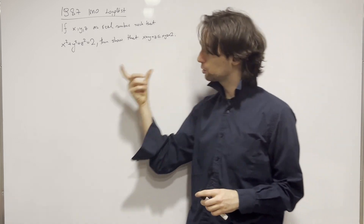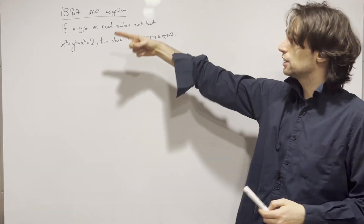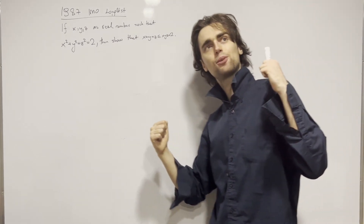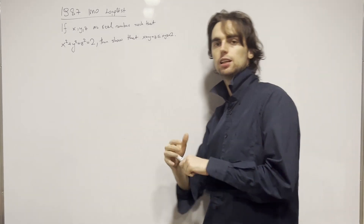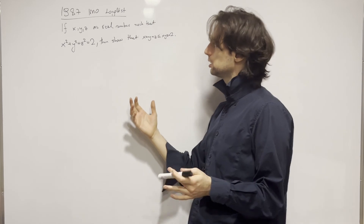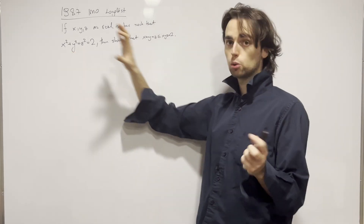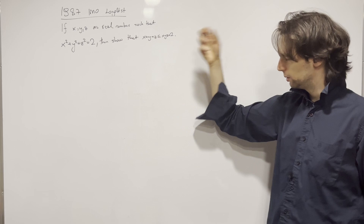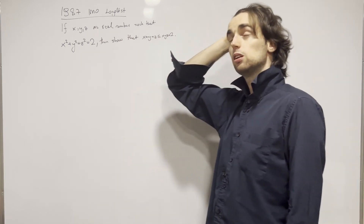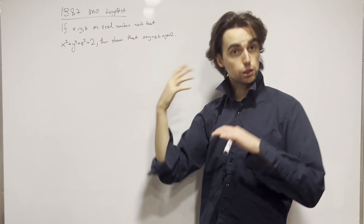I want to show you this problem because it's non-standard. It says x, y, z are real numbers — so it's not a standard inequality where you have positive reals satisfying some relationship. We have their squares, and we need to show this inequality. Now there are many ways to look at this problem, many ways to approach it.